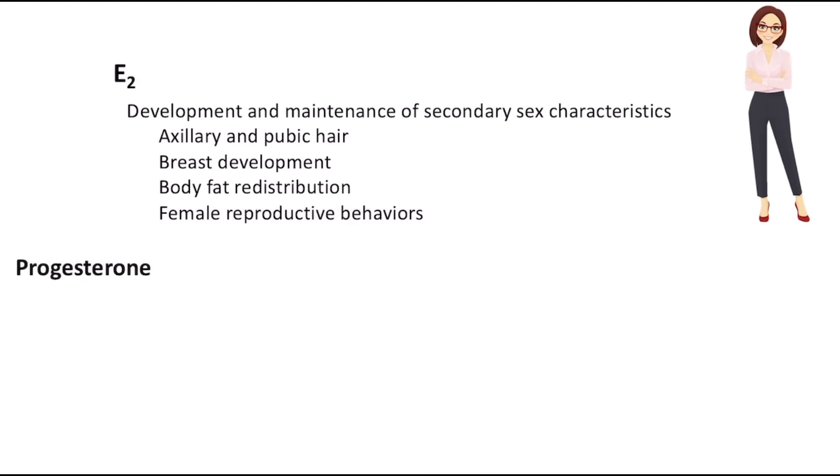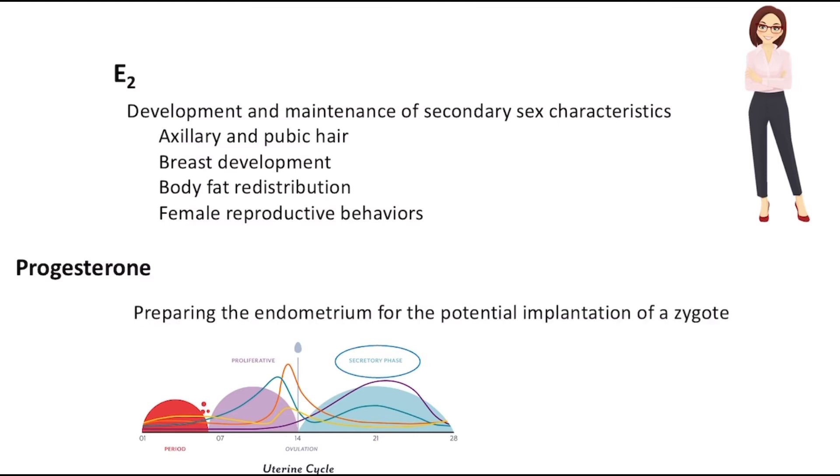Progesterone, on the other hand, is more active following reproductive maturity. Each month, progesterone plays an important role in the secretory phase of the uterine cycle by preparing the endometrium for the potential implantation of a zygote. More specifically, progesterone ensures the thickening of the endometrium while also stimulating the secretion of various nutrients in preparation for the zygote that may come.